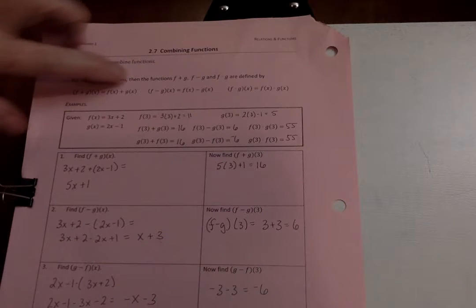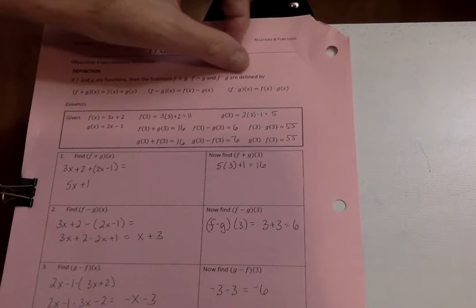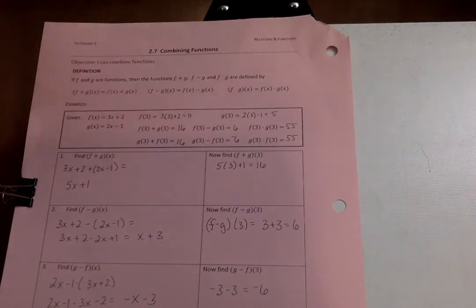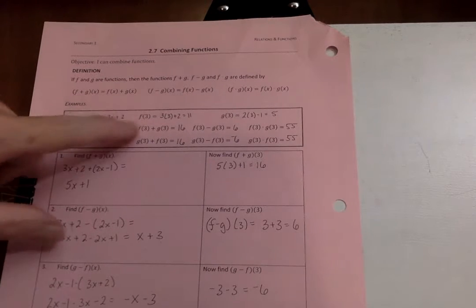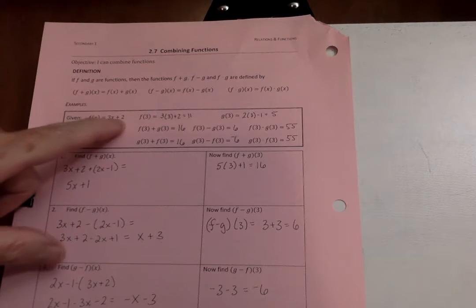If f and g are functions, then the function f plus g, f minus g, and f times g are defined as this. So just kind of get used to what it looks like. It's really quite simple when it says f of x equals 3x plus 2, f of 3, you're just putting 3 in for x, 3 times 3 is 9, plus 2 is 11.